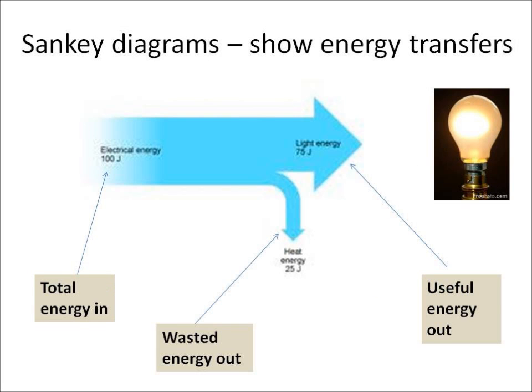We can use diagrams to show energy transfers. One type of diagram is called a Sankey diagram. A Sankey diagram shows the total amount of energy going in, the useful energy coming out, and the wasted energy coming out. In this example, the energy going in is electrical energy into a bulb. The useful energy out is the light energy and the wasted energy out is heat energy.